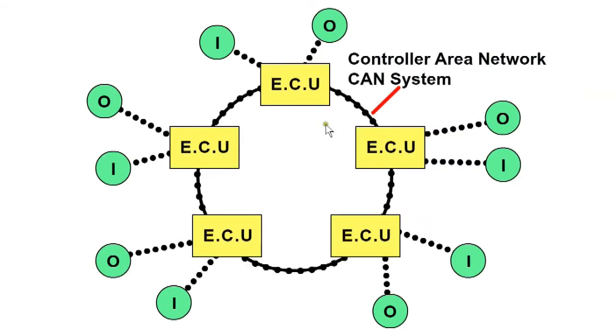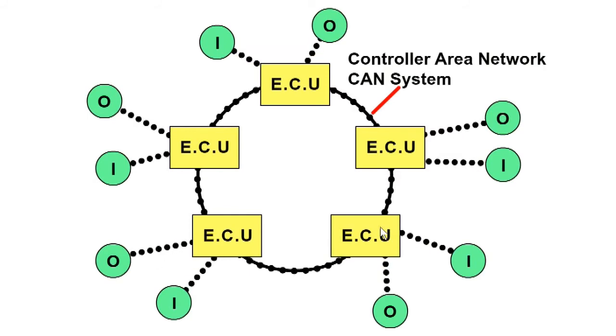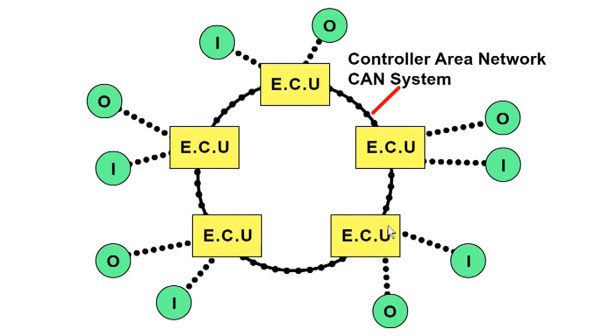Most cars have separate ECUs for different control systems, with each ECU having inputs and outputs. For example, the anti-lock braking system would have a separate ECU from the engine management ECU. All the information is transmitted between the ECUs using a bus system called a Controller Area Network (CAN) system. Each ECU is programmed to accept relevant information if required. For example, road speed might be relevant to a number of control systems.